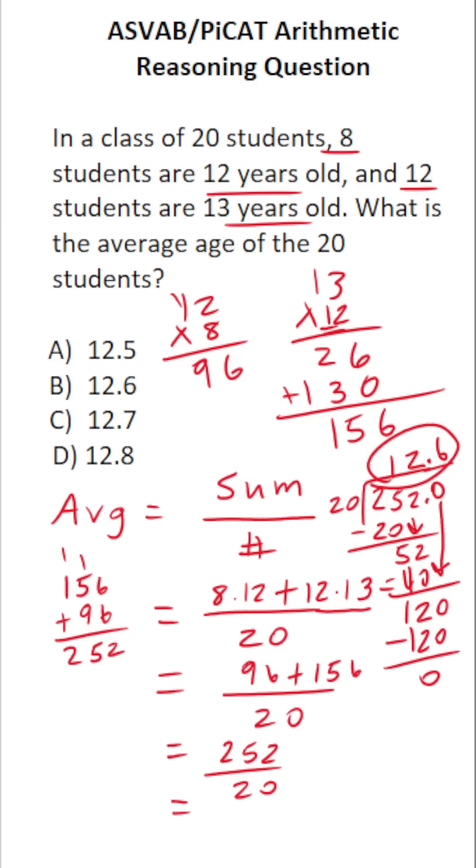So the average age or the weighted average of the ages of the students in this class is B, 12.6 years old.